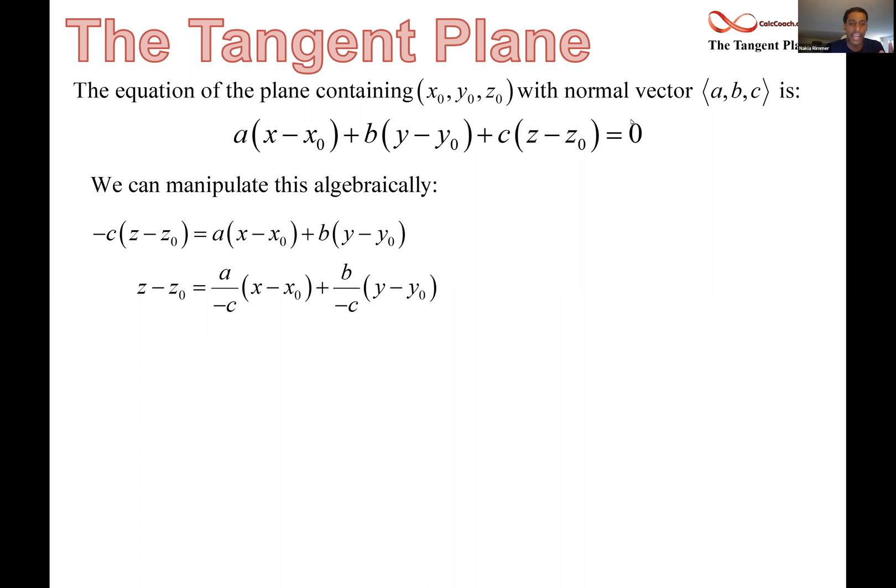So this is analogous to what we had in 2D. We have z minus z naught equals something times x minus x naught and something else times y minus y naught. But having the a over negative c is a little awkward, so we're going to rename them. We're going to call the a over negative c capital A, the b over negative c capital B. And so this is the form of the equation for any plane.